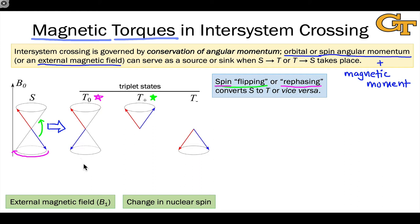A change in nuclear spin can be used to power a change in electron spin, and so this is yet another source of magnetic torque. For example, a spin-1/2 nucleus — a hydrogen-1 nucleus — flipping in spin in the vicinity of one of the unpaired electrons in an excited state can result in the conversion of the singlet to the triplet. Energy conservation is important to keep in mind: if the intersystem crossing is downhill in energy (singlet to triplet), then the nuclear spin flip must be uphill in energy, or endergonic.